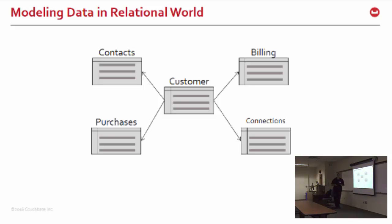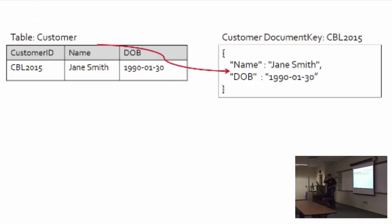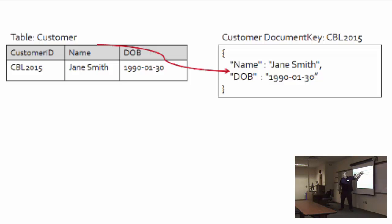This is one of the problems NoSQL addresses with a more flexible schema. Let me show how we might model that as a JSON document. Starting very simply: we have a primary key and two properties for Jane Smith. In a document, the document has a key that roughly corresponds to the primary key, and we have a JSON object with two fields — name and date of birth. The primary key becomes the document key; column name and value become key-value pairs in JSON.